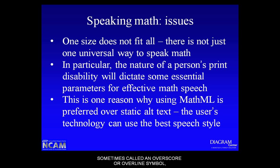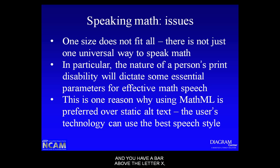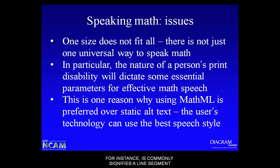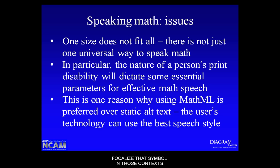The common overbar or overscore symbol has different meanings in mathematics. For instance, a bar above the letter X represents 10,000 in Roman numerals. A bar above numbers in a decimal represents a repeating decimal value. A line above the letters AB commonly signifies a line segment in geometry. There are also other uses in statistics and set theory, so obviously there will be different ways to vocalize that symbol in those contexts.